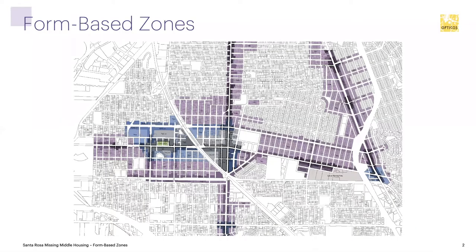Looking back from session two, we talked about the regulating plan — and that's where we're getting today's zones. The form-based zones go onto the regulating plan, as we mentioned. The color intensity reflects the intensity of lot coverage, the intensity of uses, and the relative height of buildings. The darker colors in the gray and blue are the largest and most intensely used buildings, while the lighter purple represents the smallest and least intensely used buildings — houses in this case. Each of these colors represents a physical environment.